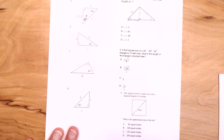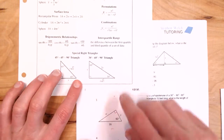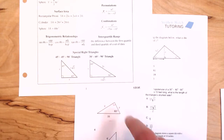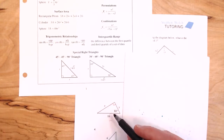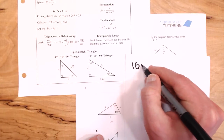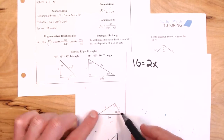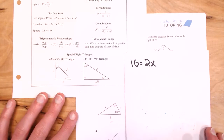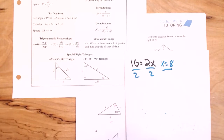Number three is a 30-60-90 again. I see that the long side corresponds to the long side of the reference triangle — it's the hypotenuse. This is 16, so 16 equals 2X, since they are both the hypotenuse. Dividing both sides by two gives X equals eight. The short side Y corresponds to X on the reference triangle, so Y equals eight.